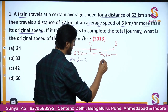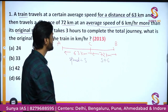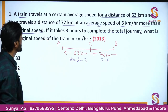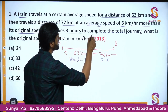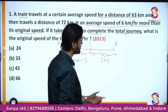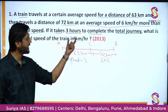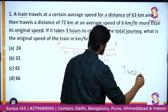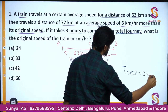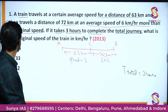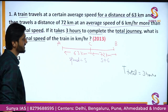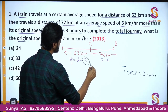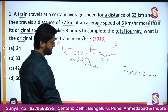Here the speed is S plus 6 kilometers per hour. The question says it takes 3 hours to complete the total journey from A to B, so T total equals 3 hours. What is the original speed of the train in kilometers per hour? We have to find the value of S.